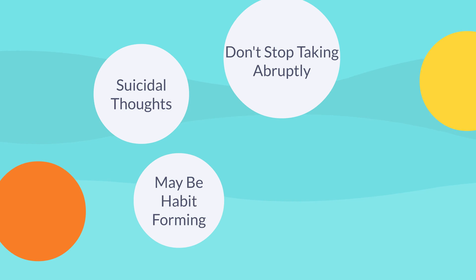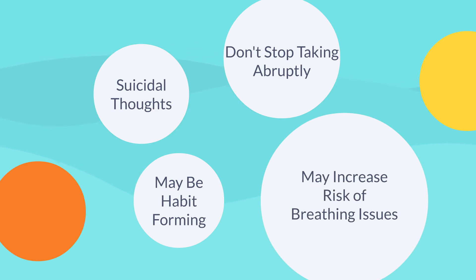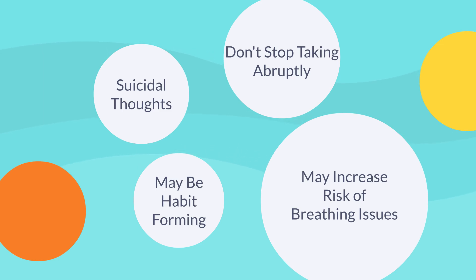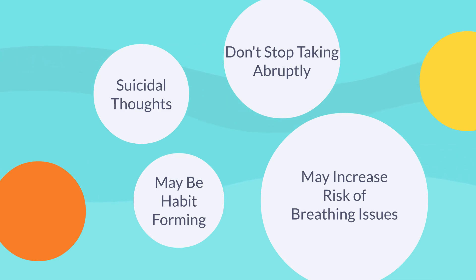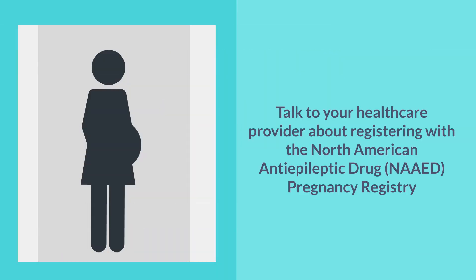As recently as December 2019, the FDA issued a specific warning about gabapentin affecting the breathing of people already at risk of breathing problems. This includes people who take opioid medications concurrently, any medication that affects the central nervous system, or people who have COPD. For such people, definitely work with your doctor — there may be dose adjustments needed. A link to that specific FDA warning will be in the description below.